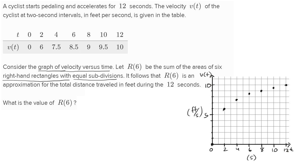We could imagine fitting a curve through these points — they're just sampled from a curve that might look something like this. Now let's think about the sum of the areas of six right-handed rectangles with equal subdivisions. When they're talking about equal subdivisions, they're talking about equal subdivisions along the time axis. We're talking about the first 12 seconds — if we divide 12 seconds into six equal sections, they would each be two seconds wide.